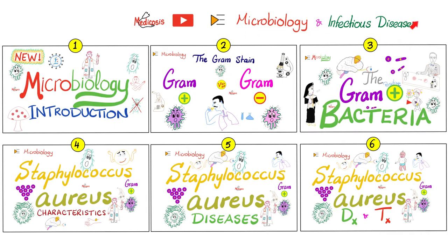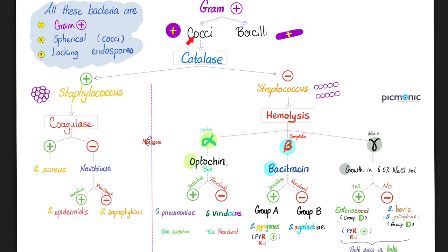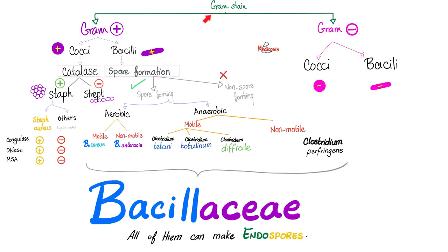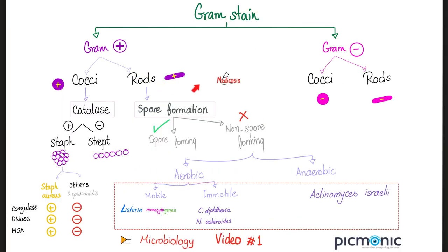Please watch the videos in this playlist in order. As for the gram-positive cocci, refer to previous videos, because today we're talking about a gram-positive rod. Is Listeria spore-forming? No. Listeria is non-spore-forming.